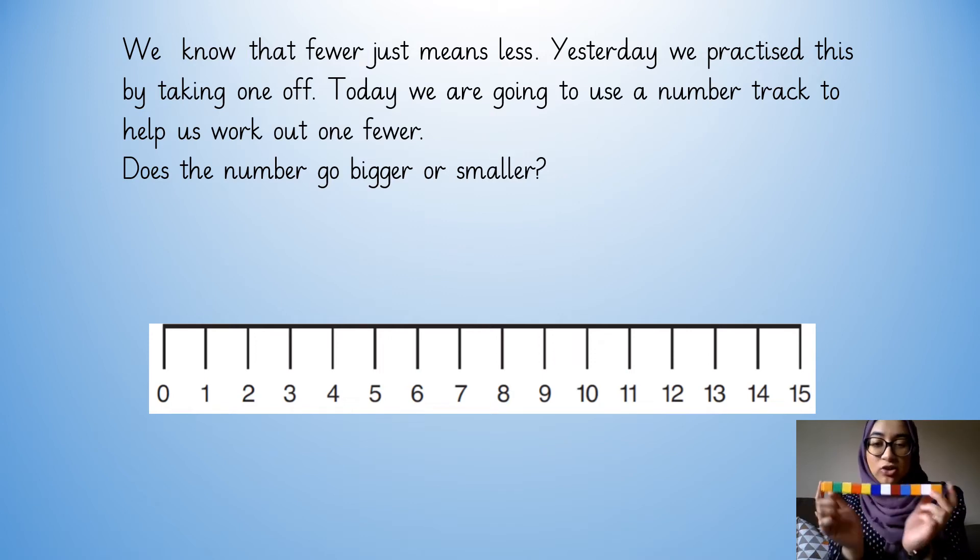So I had a group of objects, I've got 12 here. 1, 2, 3, 4, 5, 6, 7, 8, 9, 10, 11, 12. I've got 12 objects here. And I want to work out what one fewer than 12 is. What do I need to do reception? I need to take one off. Excellent. Taken one off. How many do I have now?